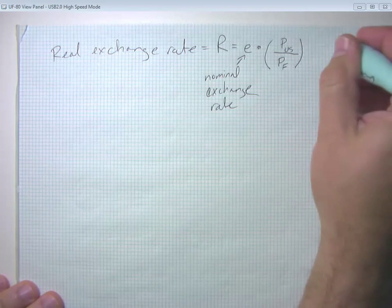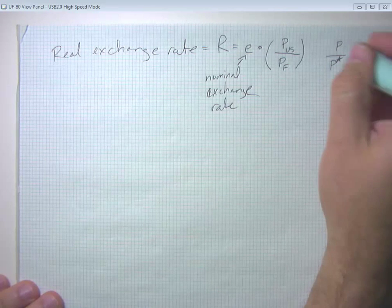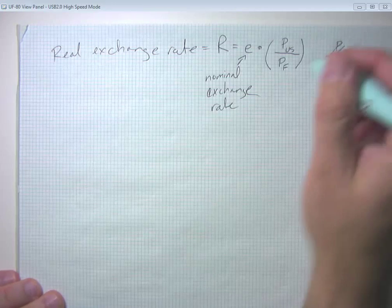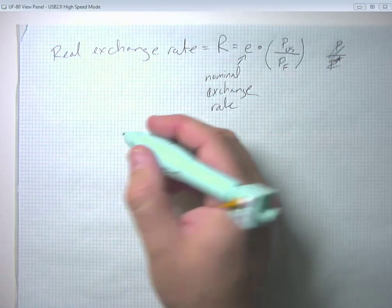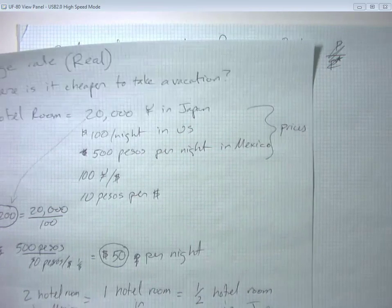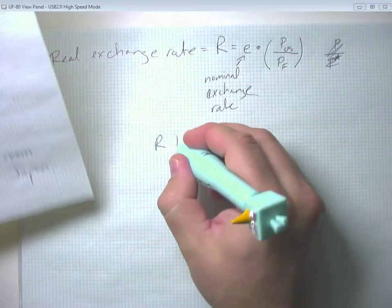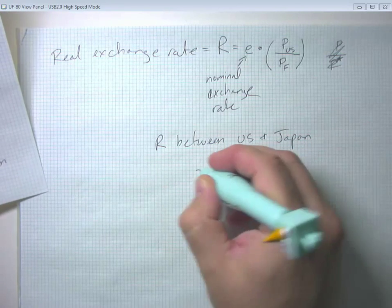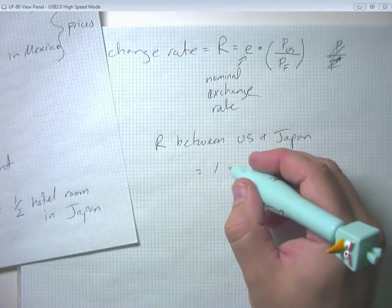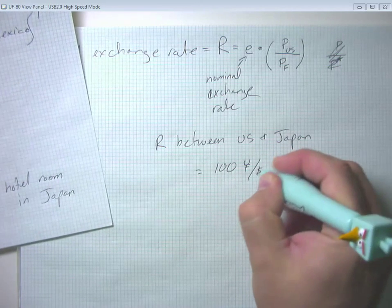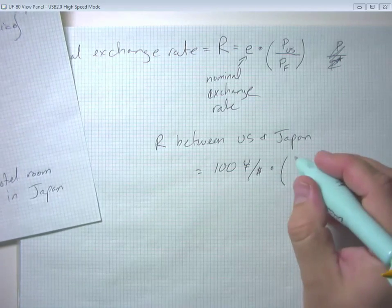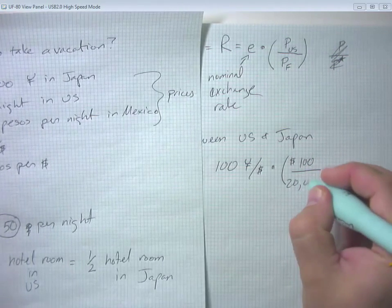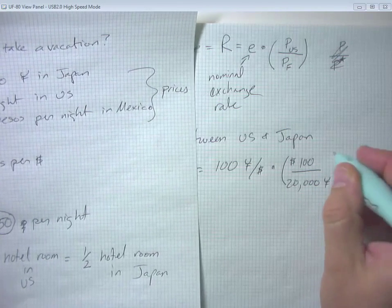And sometimes this could be called P or the other one is sometimes called P star. Or instead of US, we might call it P sub D for domestic. But don't get too hung up on that. So the basic idea would be if we went back to our previous data, what's the real exchange rate? The real exchange rate between US and Japan is, well, the nominal exchange rate was 100 yen per dollar. And the price levels were 100 dollars per night in the US and 20,000 yen per night in Japan.